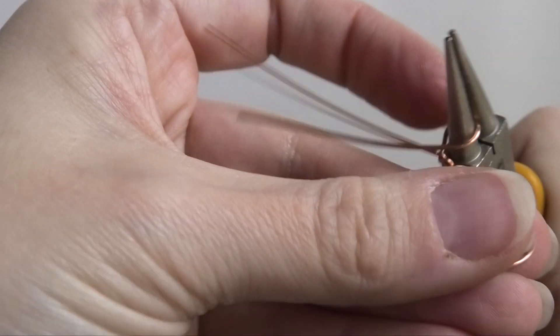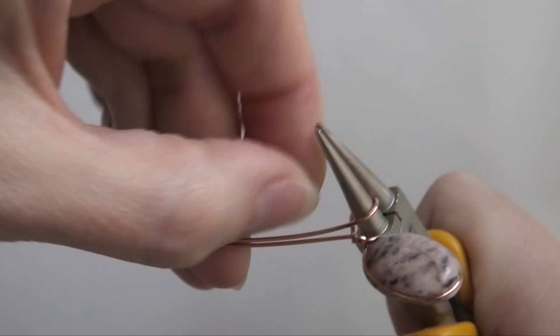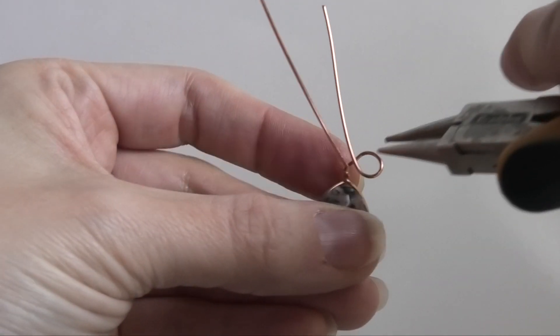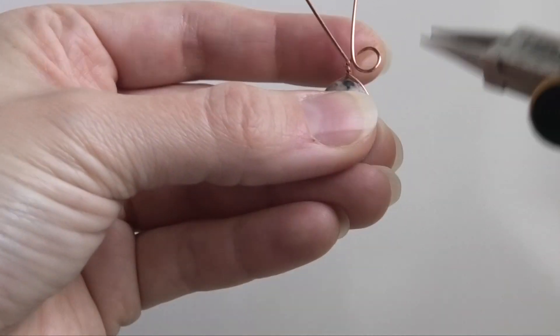So if you're using your round-nose pliers, you would just be bending around like that to make your circle.